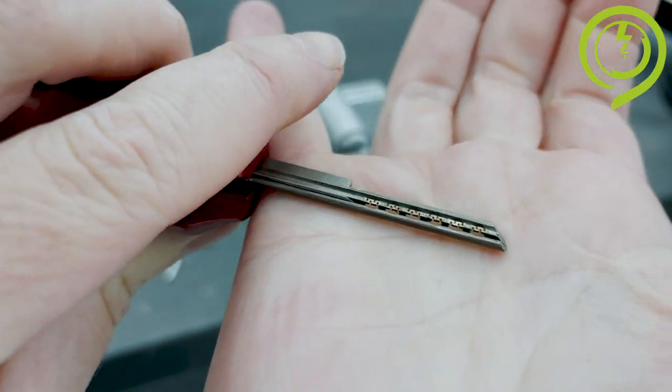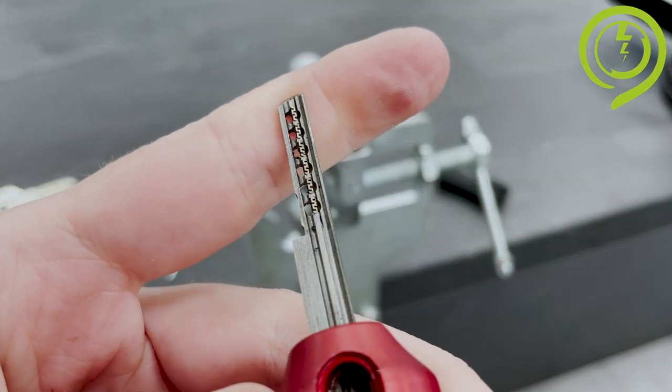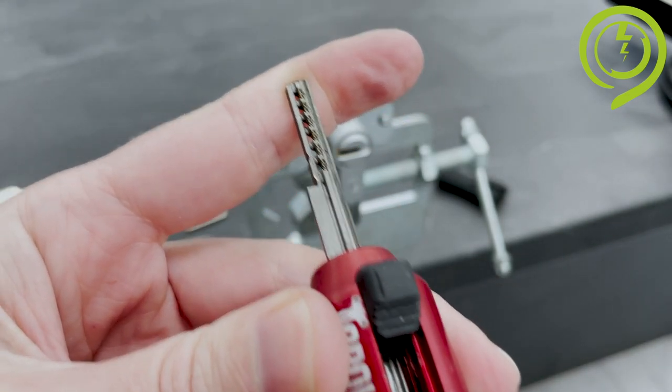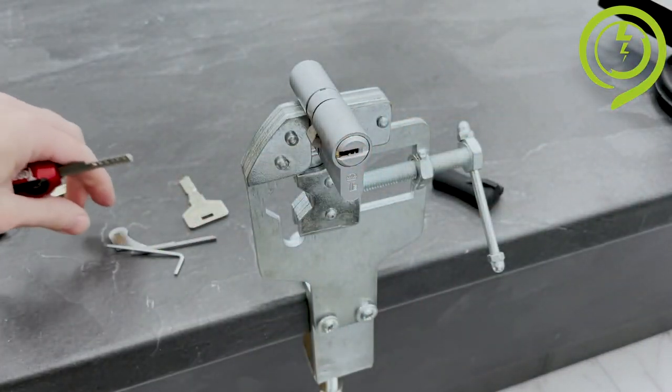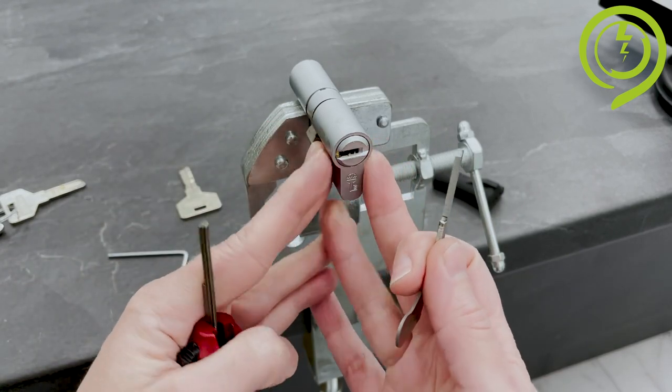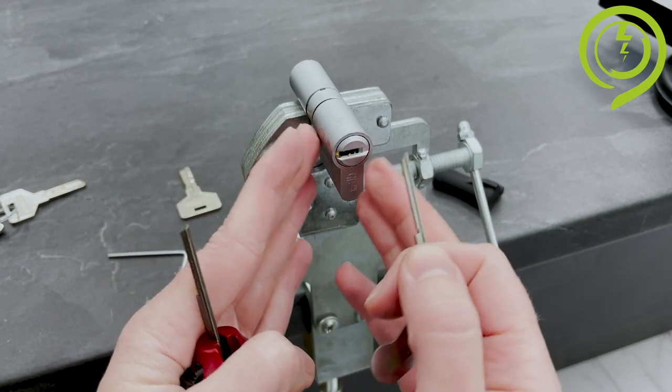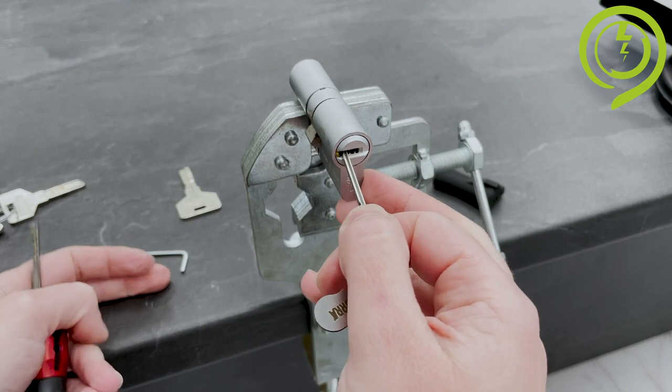This is how the pins should look like. The tool is now ready to be inserted inside the lock. You slide the button up towards the plate and it's ready. Now, the tension is always positioned on the left side because the pins are positioned on the right.